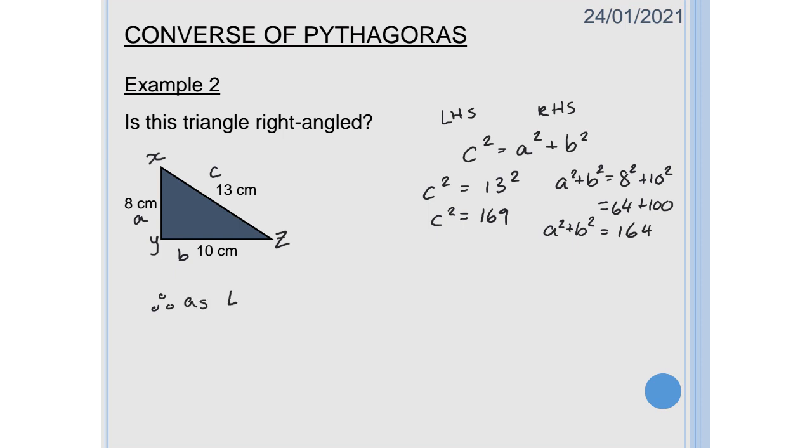So therefore as the left hand side I'm going to make a quick change to the previous one does not equal the right hand side by the converse of Pythagoras triangle XYZ is not right angled